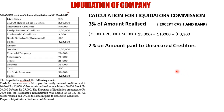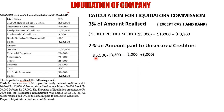From total receipts of Rs. 95,500, we deduct: liquidation expenses Rs. 2,000, commission on assets Rs. 3,300, and preferential creditors Rs. 3,000. These amounts recorded on the credit side of the liquidator's account total Rs. 8,300. So Rs. 95,500 minus Rs. 8,300 = Rs. 87,200 is the balance amount available.